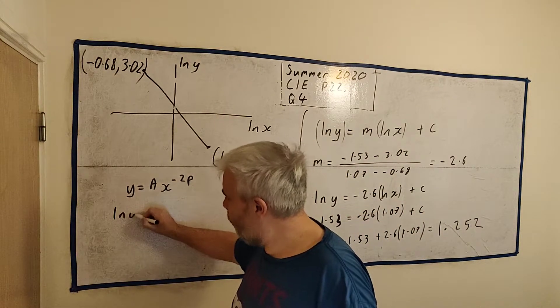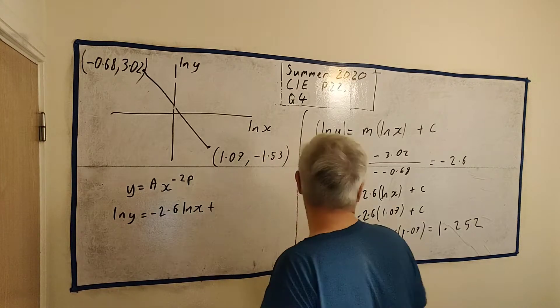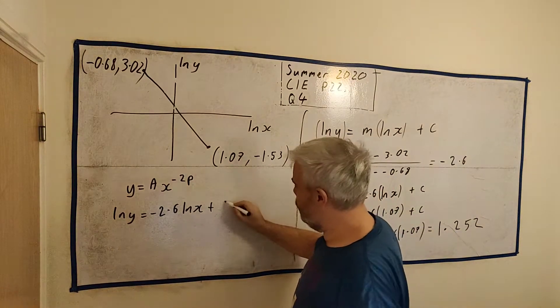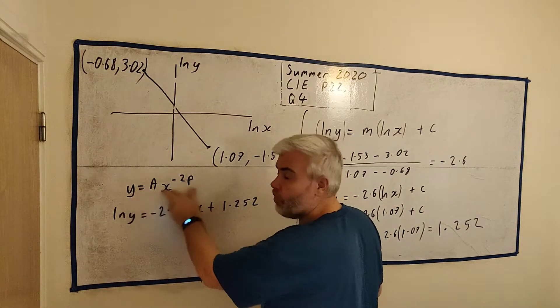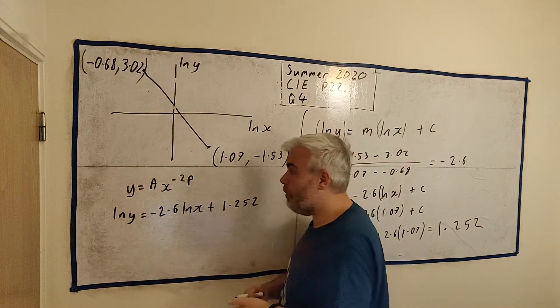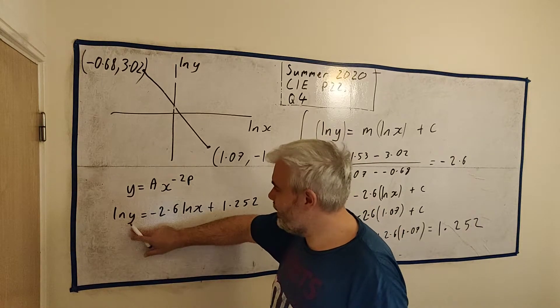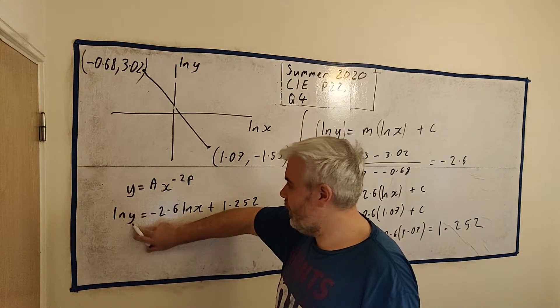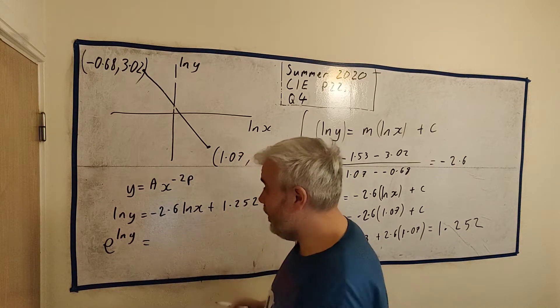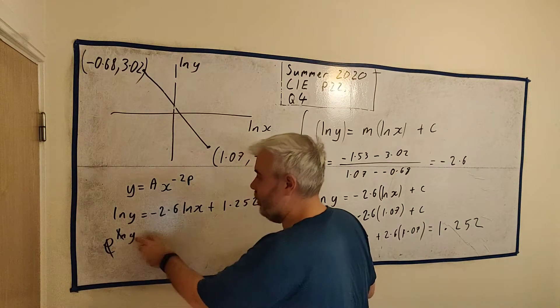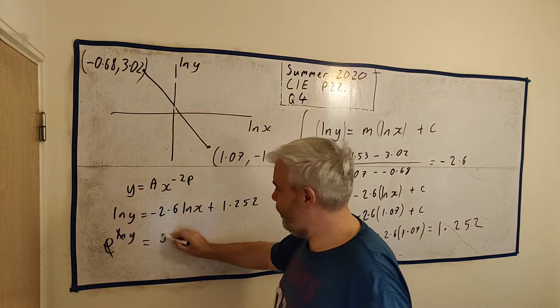Now how does that help us answer this question here? Well, we now know that natural log of y is equal to minus 2.6 natural log of x plus 1.252. Now let's play around with this equation we have here to make it look more like this. And if it looks alike, we might be able to just go, oh well there's a and there's p. And that is in fact what's going to happen. So how do we make this look like this? Well, natural log y and y, the difference between them is just e. e natural log y.